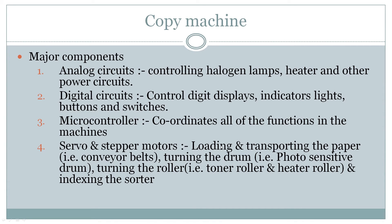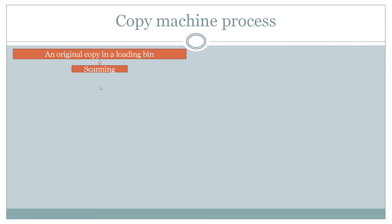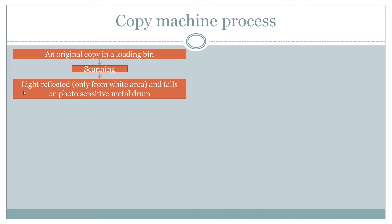Now we will see how the copy machine works. First, we place the original document at the top. A light scans the original document. That light which passes on the paper is reflected. Where there is a white area, it reflects, and where there is something written in blue or another color, that area absorbs the light and does not reflect. Only the white area reflects, and that blank portion light falls on the photosensitive metal drum.